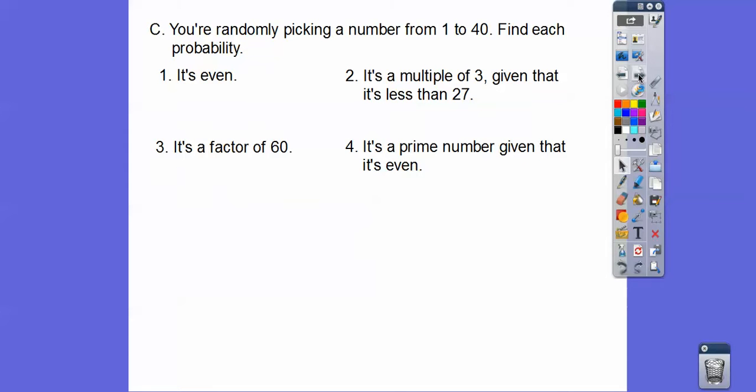You're randomly picking a number from 1 to 40. Find each probability. The probability that it's even - there's 20 of them out of 40, so that's 1 half. The probability that it's a multiple of 3, given that it's less than 27. This is a conditional probability. There's 26 numbers that are less than 27, and of those 26, there's 8 of them that are multiples of 3. So that's 8/26, which reduces to 4/13.